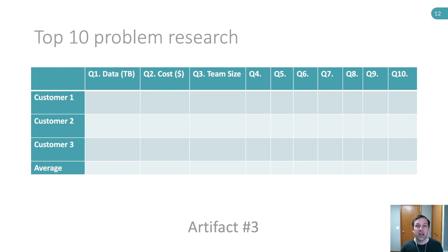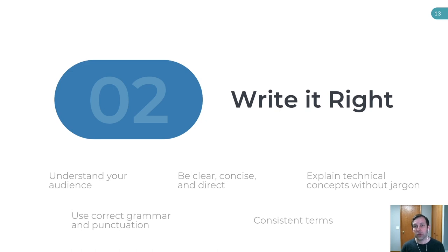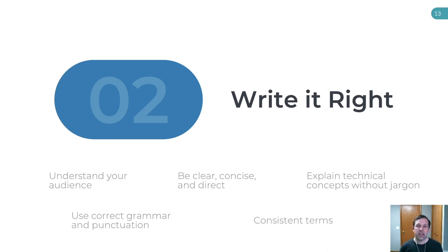Once you've got all that research together it's time to start writing. Rather than going directly to a PRFAQ — which is the standard Amazon format for product launches — I start out with a messaging framework, which we'll talk about in a second. But first, to understand why Amazon writes: the reason is to lower the cognitive load for a decision maker who might be giving you headcount for the product you want to build and launch. Putting the writing in a standard format helps with that, as does being clear, concise, and direct; explaining without technical jargon; using correct punctuation and grammar; and using consistent terms.